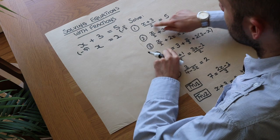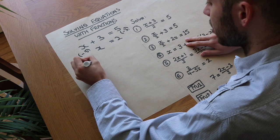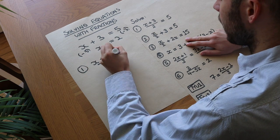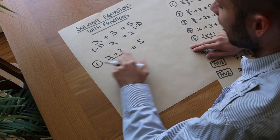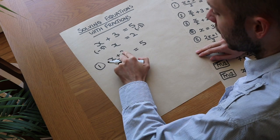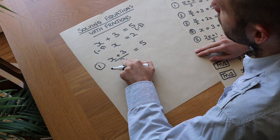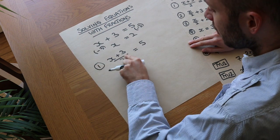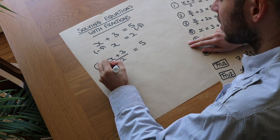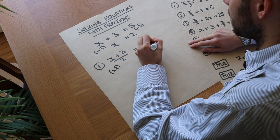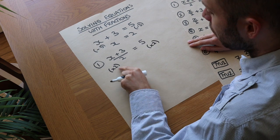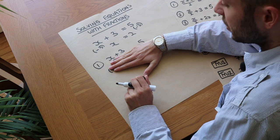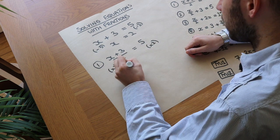It's not really any different in principle for our first question: (x plus 3) over 2 is equal to 5. We think about the story of what's happening to x — we're adding 3 and then dividing all of that by 2. So we undo those things in reverse order. The last thing we did was divide by 2, so we do the opposite and multiply both sides by 2. That cancels out the over 2, leaving us with x plus 3.